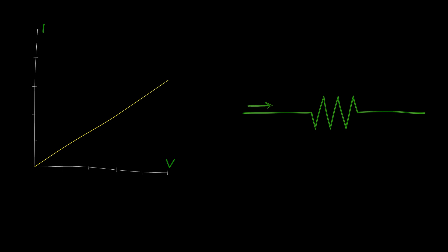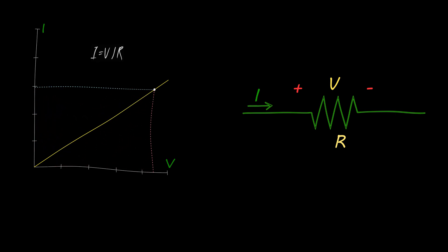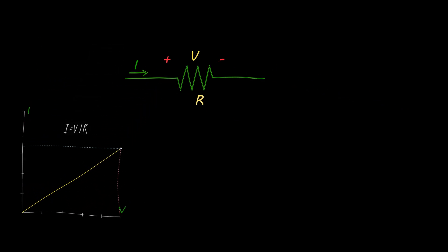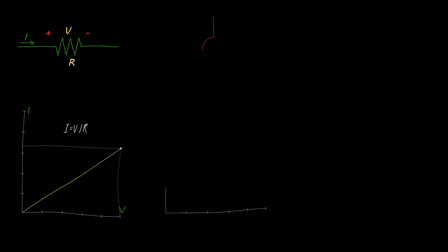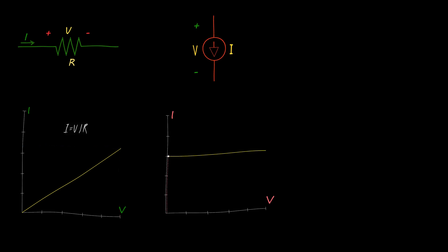For a resistor, the voltage-current relationship is linear. The current is the voltage over a resistance. Increasing the voltage across the resistor increases the current linearly. A current source, on the other hand, is a device that delivers constant current no matter what the voltage across it. The current is not sensitive to the voltage across it, unlike a resistance.